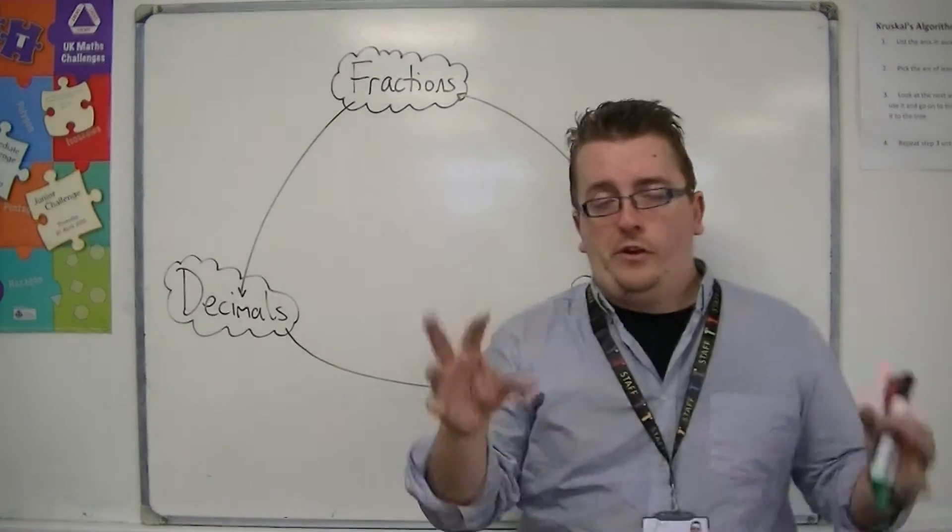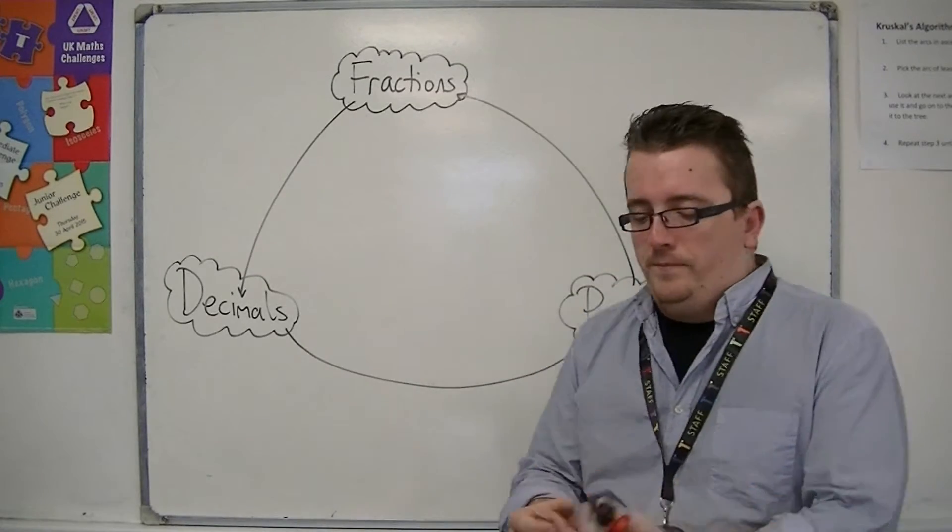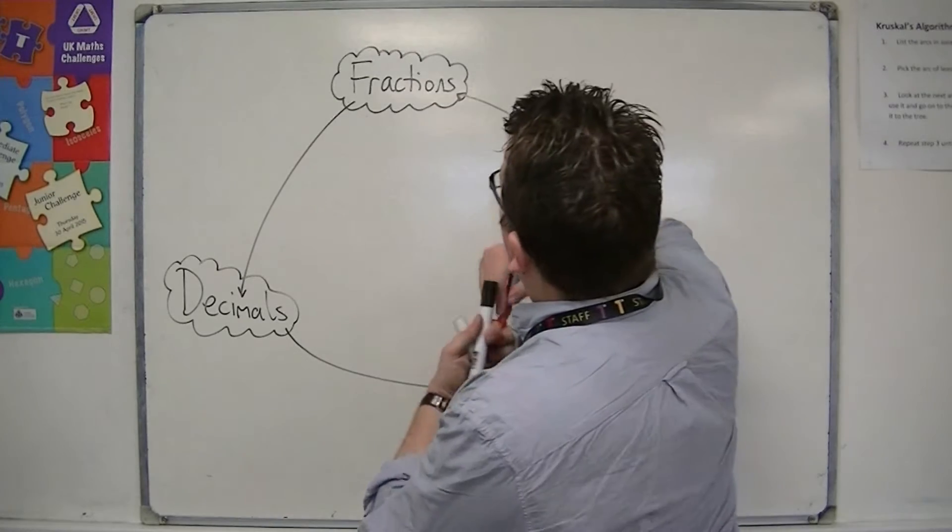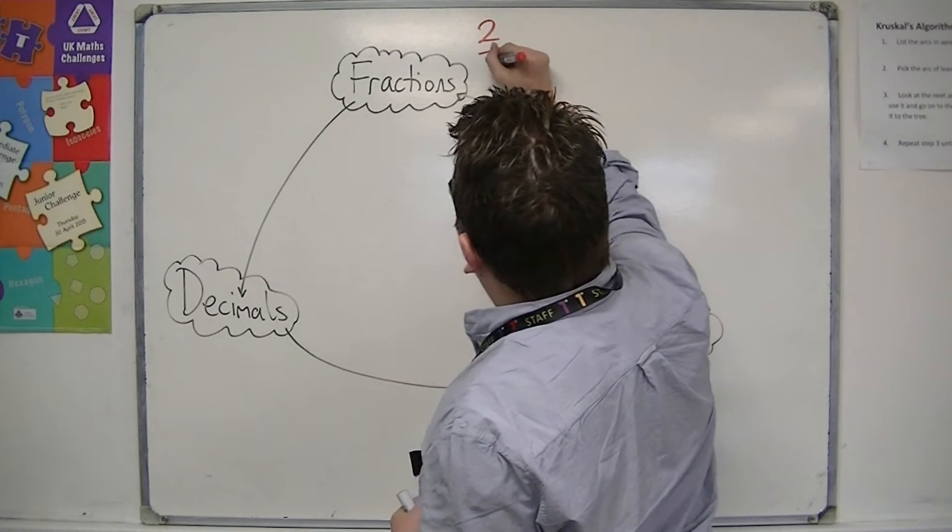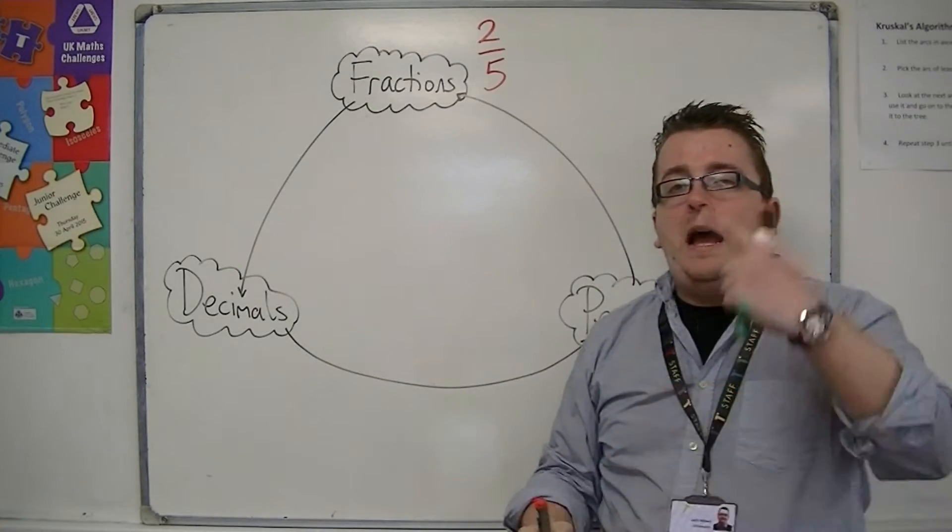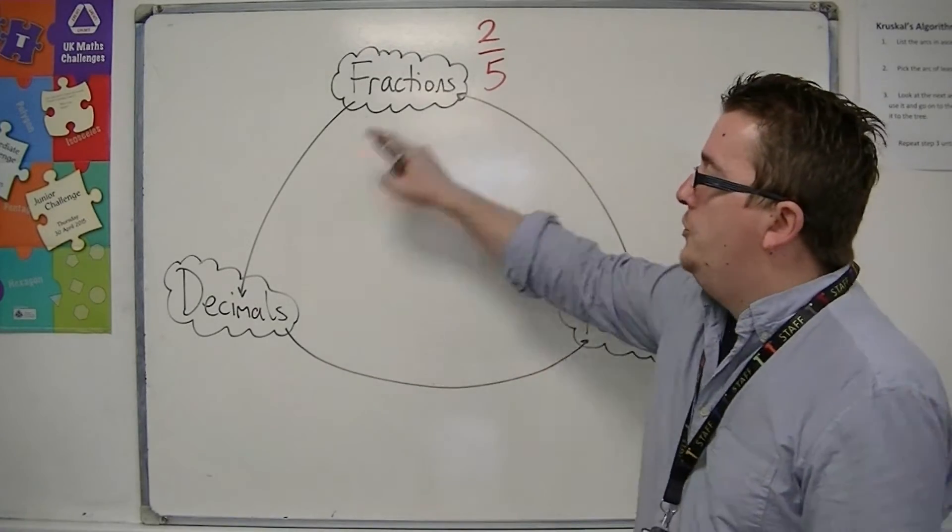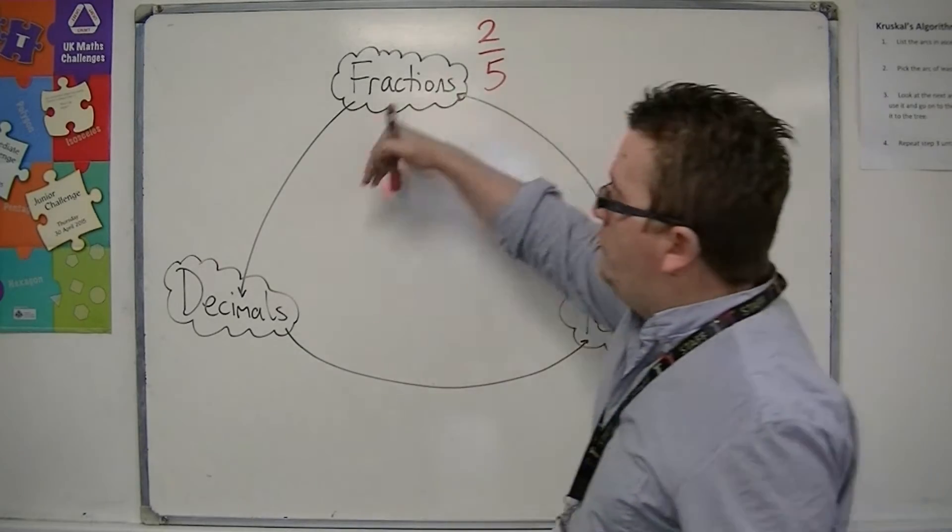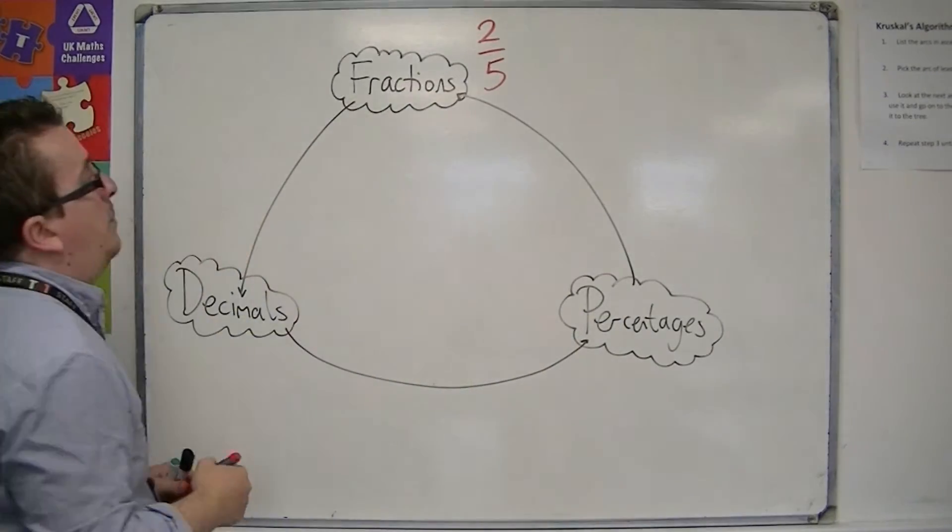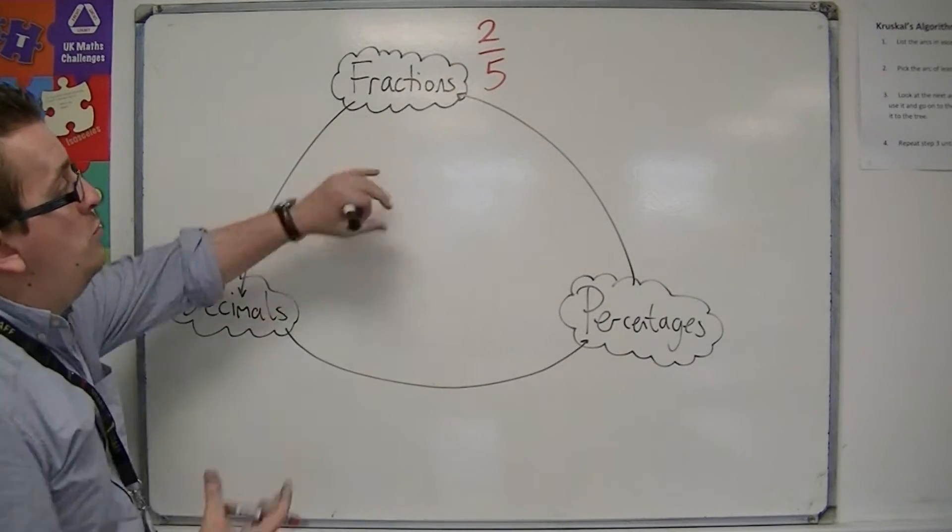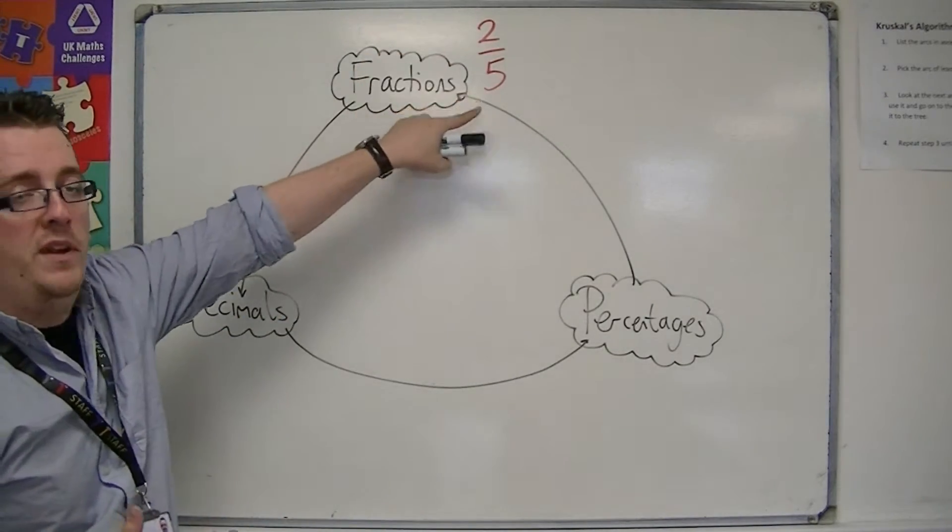So we're going to start off with a fraction. We're going to start off with something like 2 fifths. So we've got the fraction 2 fifths and we want to convert that into a decimal. The method of converting a fraction into a decimal is by getting the top and dividing by the bottom. So taking the numerator and dividing by the denominator.